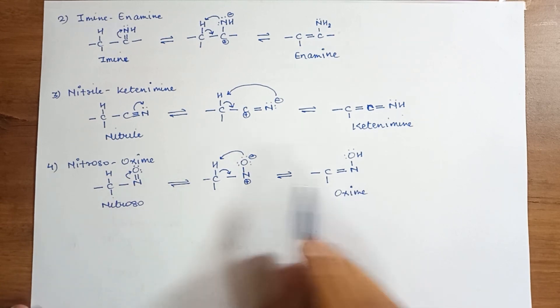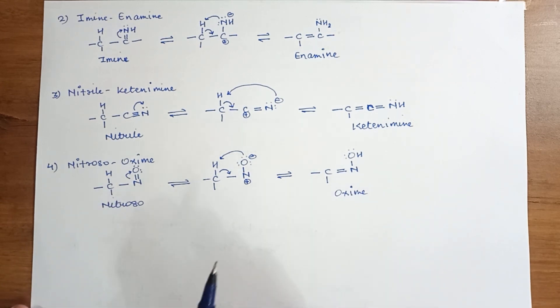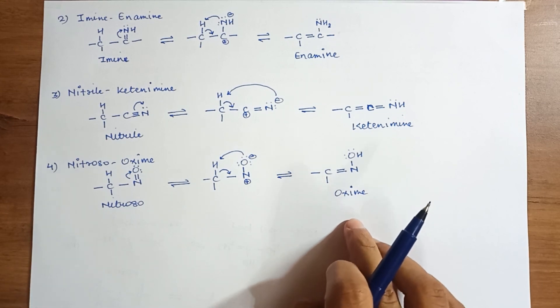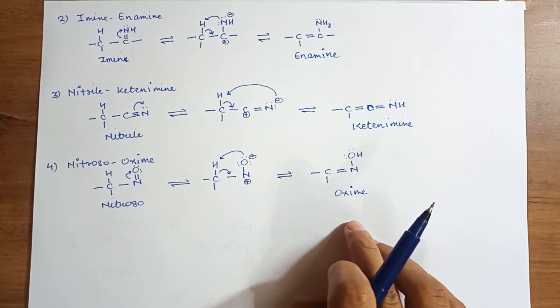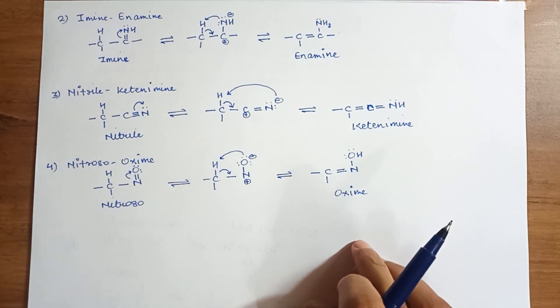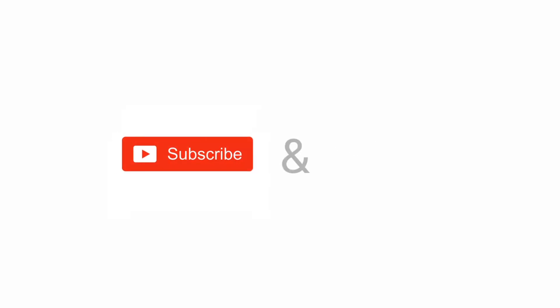In both isomers, the arrangement of atoms is different and they are in dynamic equilibrium with each other. So this was about tautomerism. Hope you have understood. If you have any doubt, please write in the comment section and I will try to solve it. If you find this video useful, please subscribe and press the bell icon for latest updates. Thank you.